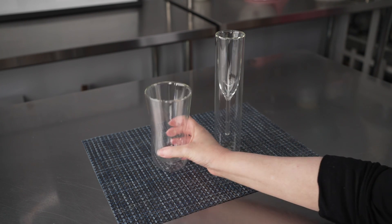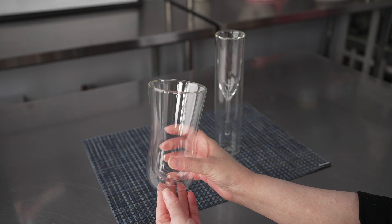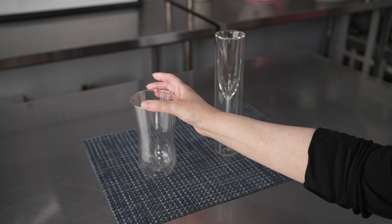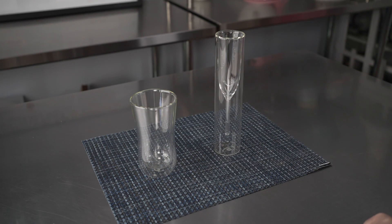We have the 10-ounce Forma drinking glass, which is three inches in diameter by five and three-quarter inches high.